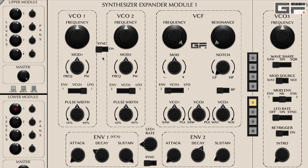The sync switch synchronises VCO1 and 2, with VCO1 becoming the master oscillator and VCO2 becoming the slave oscillator. When sync is selected, the master oscillator resets the slave oscillator (VCO2), and this produces a complex harmonic tone — particularly when the slave oscillator is modulated by a suitable source. For example, with envelope 2 selected on OBE's VCO2.